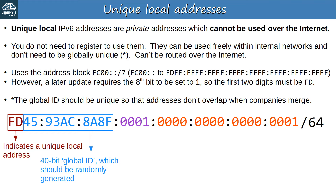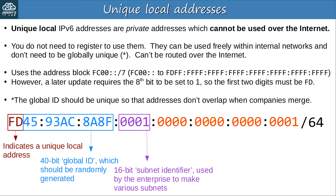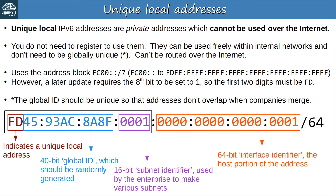The next part of the unique local address is the subnet identifier, just like in a global unicast address. These first 64 bits make up the network prefix. You don't have to use a slash-64 prefix length, but that's the standard for IPv6. The last 64 bits are the interface ID, just like global unicast addresses.